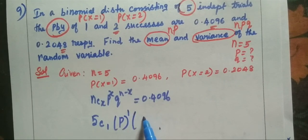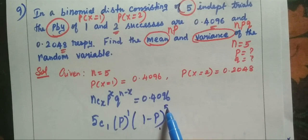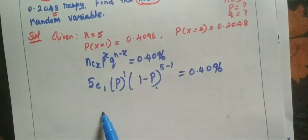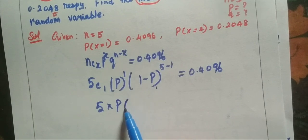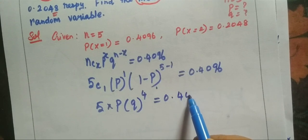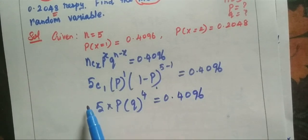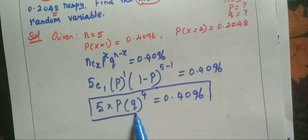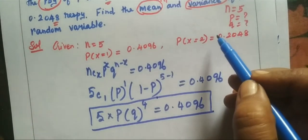Then p, we know x is 1. Then what is q? q is 1 minus p. Then n minus x, 5C1 times p times (1-p) to the power 5 minus 1 equals 0.4096. So, 5p times q to the power 4 equals 0.4096. Keep this as step 1.